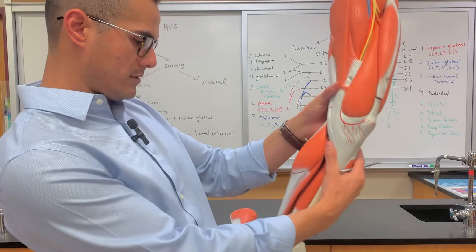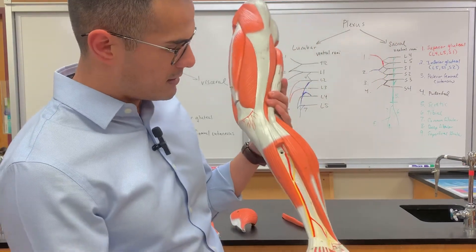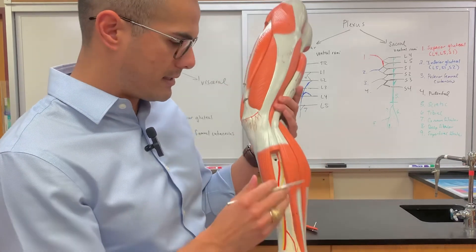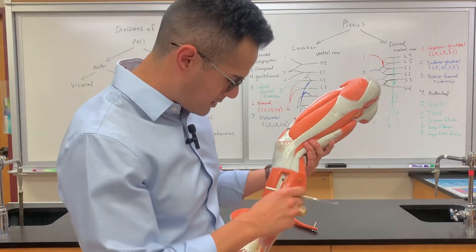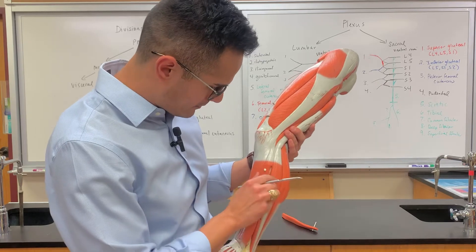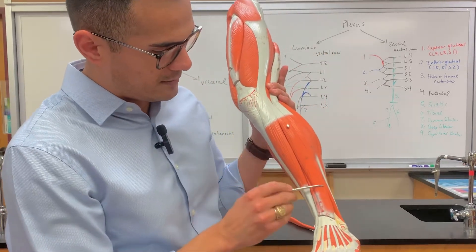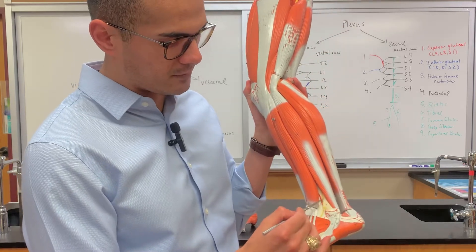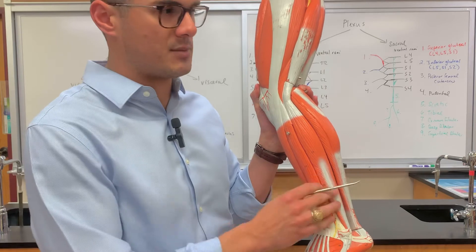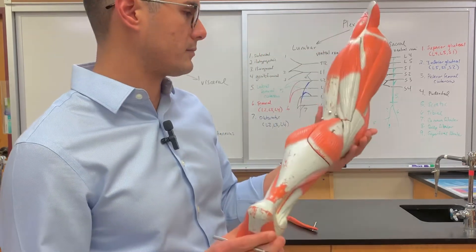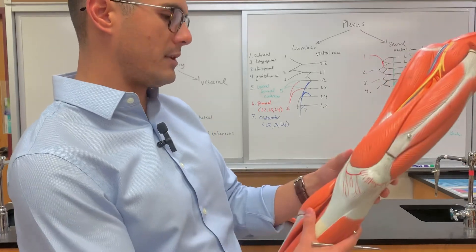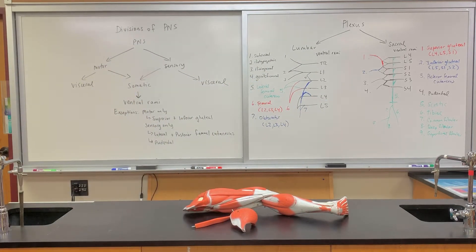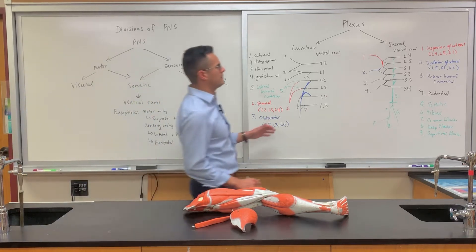Going back to the front - the common fibular branches into the deep fibular, which goes to the tibialis anterior and the extensor digitorum. The superficial fibular innervates the fibularis longus and brevis, which are the muscles where the fibula is. That covers the muscles of the leg model and their innervations.